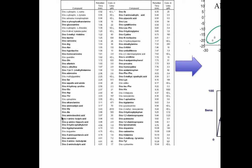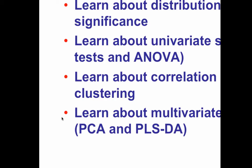There's a design to all of this. Now that you have your data in place, you're going to be able to use it and interpret it. The learning objectives for this lecture are to learn more about distributions and significance, univariate or single variable statistics such as the t-test, analysis of variance or ANOVA, correlation and clustering, ROC curves or receiver operating characteristic curves, and multivariate statistics — two or more variable statistics — including principal component analysis and partial least squares discriminant analysis.